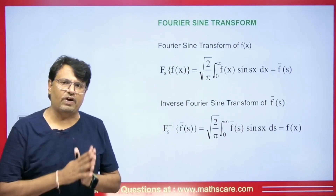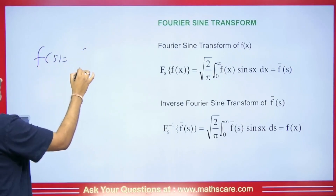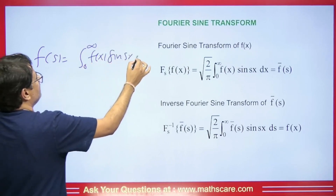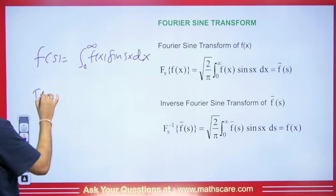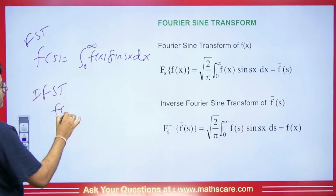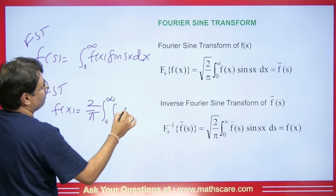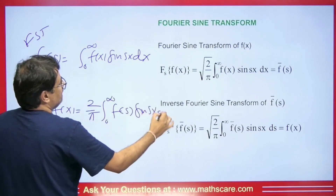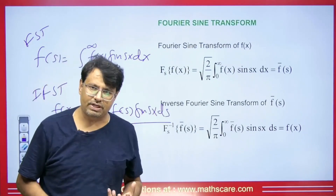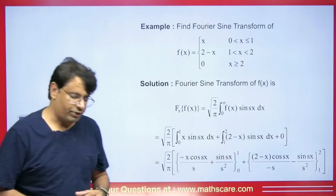Sometimes in some books the formula may be slightly different. There, the Fourier sine transform formula is from 0 to infinity f(x) sine(sx) dx, and the inverse Fourier sine transform is (2/π) from 0 to infinity f(s) sine(sx) ds. It's a bit tricky so you need to be careful. Both methods and both formulas are used — ultimately, they both lead to the same answer. Let's start and take some questions.